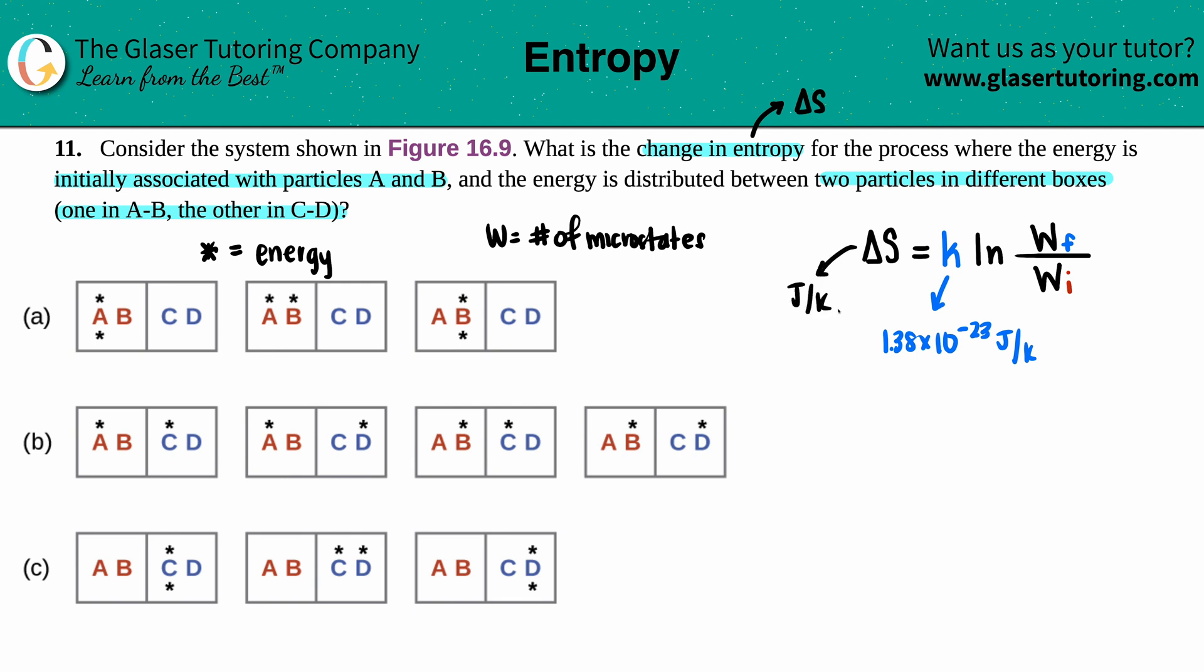Let's figure out what the initial microstates were. They said initially we were only allowed to associate with particles A and B, so we want that energy that was only on A and B. Let's go through the situations and figure out which ones are on A and B. This one can't be it, those stars are only on A. Here's one of them because the star is on A and B. This is A and C so that doesn't count, A and D doesn't count, B and C, B and D, all C, C and D, and all D. So there's only one initial value.